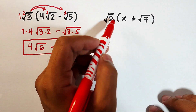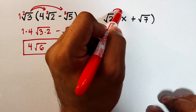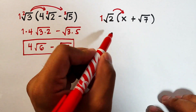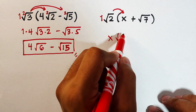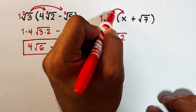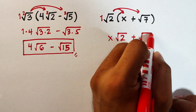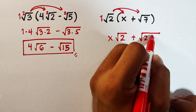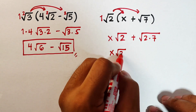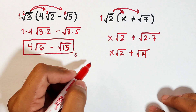Next, let's take the square root of two times the quantity x plus square root of seven. We multiply square root of two times x: the coefficient is one times x, giving us x, then copy the square root of two. Next, we multiply square root of two and square root of seven, giving us plus square root of two times seven. So we have x square root of two plus square root of fourteen.